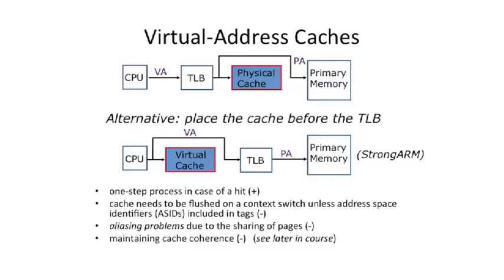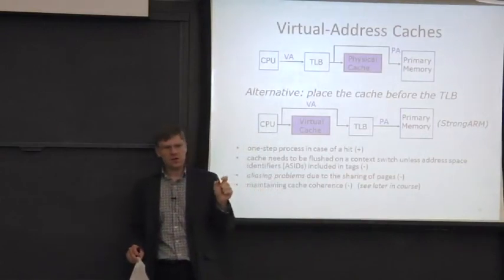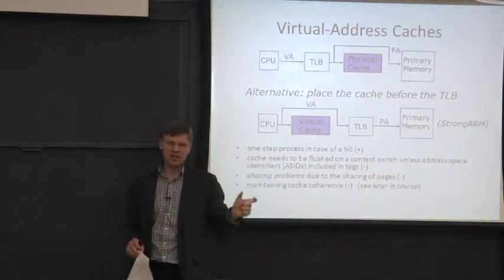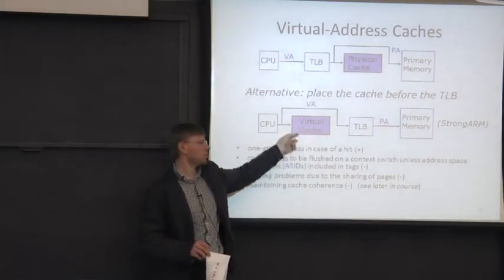One of the major challenges with virtually indexed caches is aliasing problems. Before, when you put something in the cache, it could only be in one place in a direct-mapped cache, or in n places in an n-way associative cache. But if you start to have bits above the minimum page size feed into the cache index, it could actually be in multiple places in the cache.